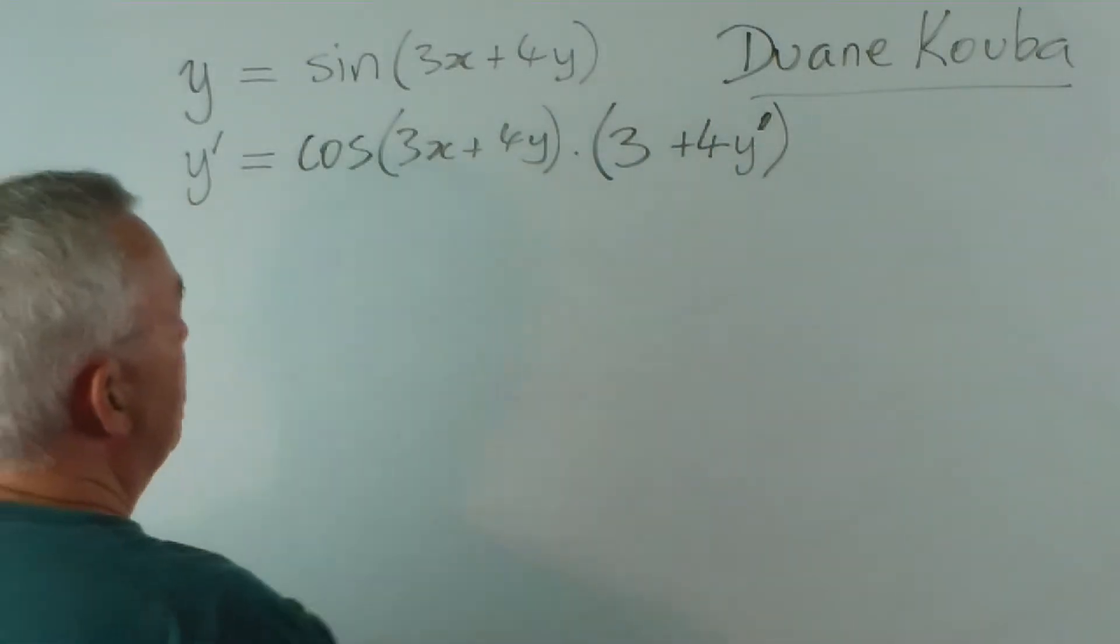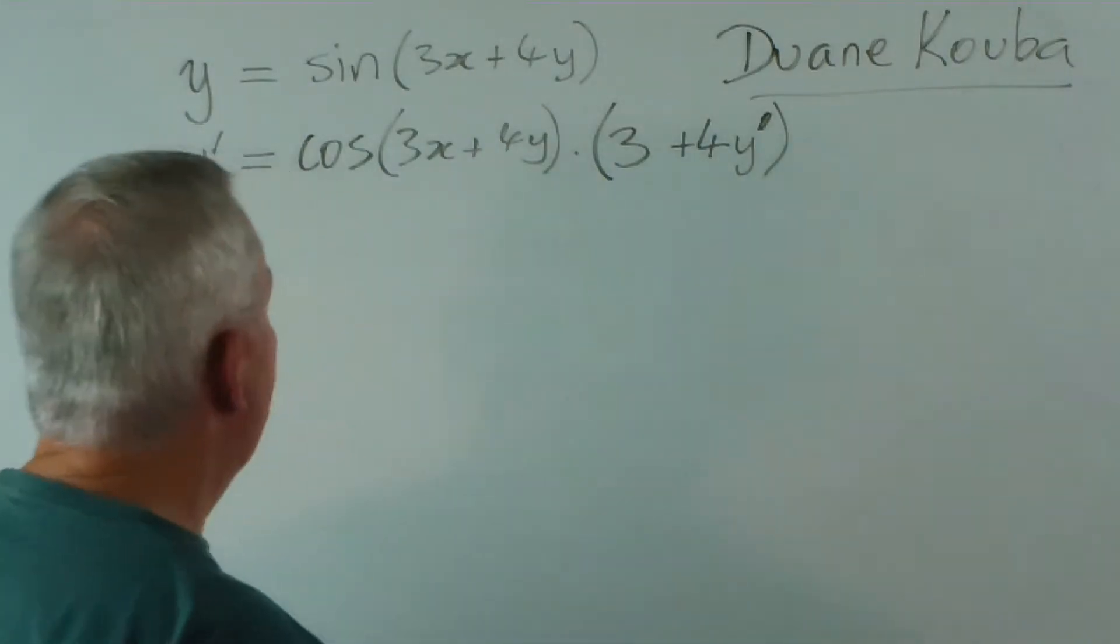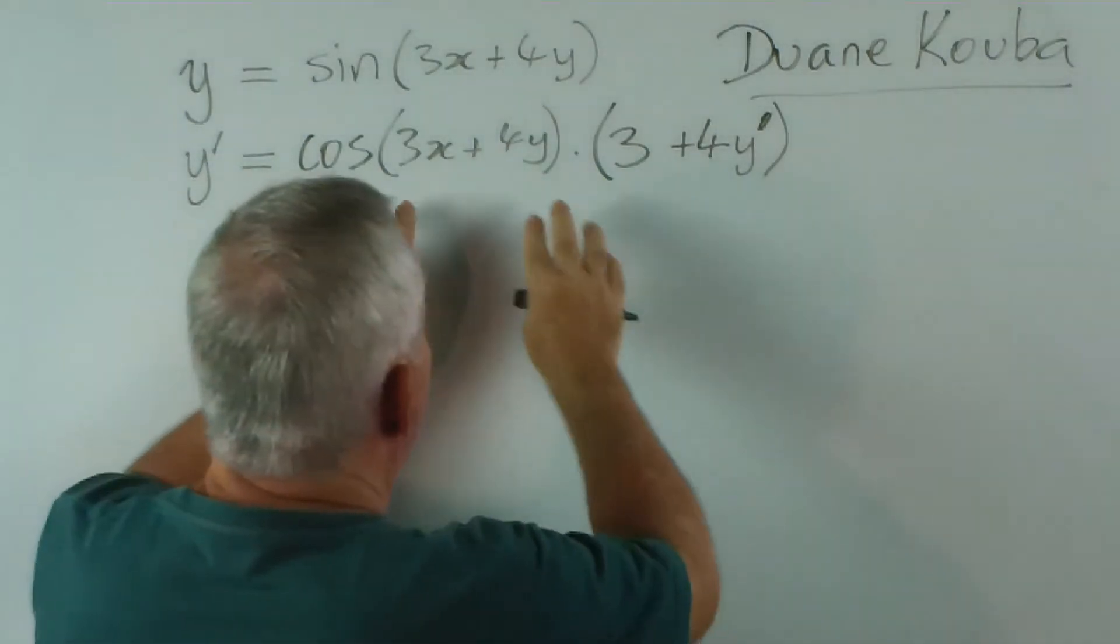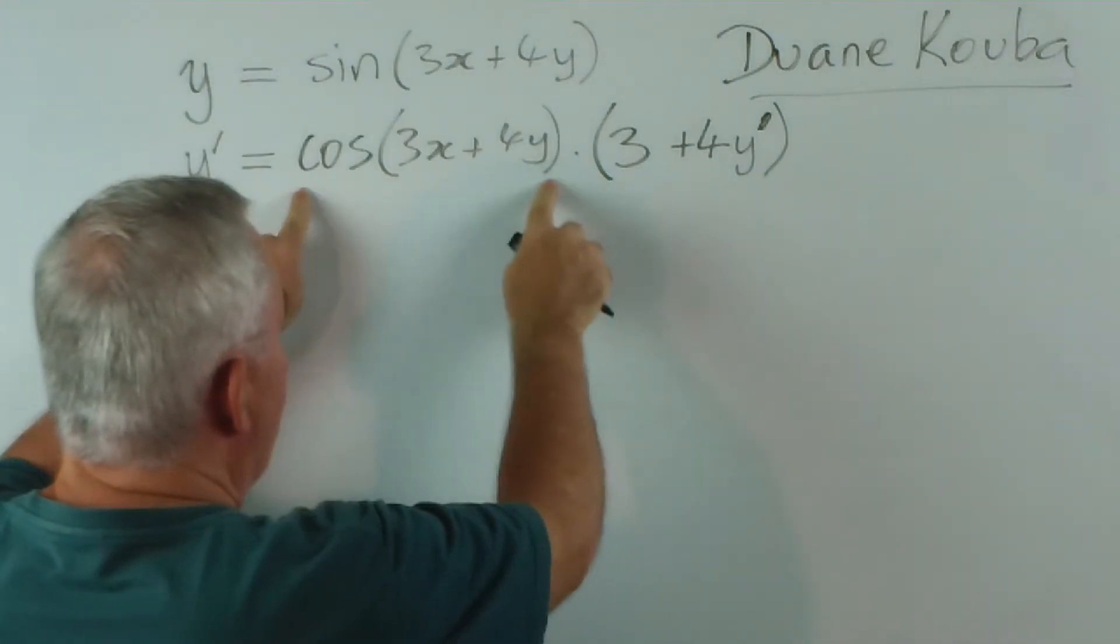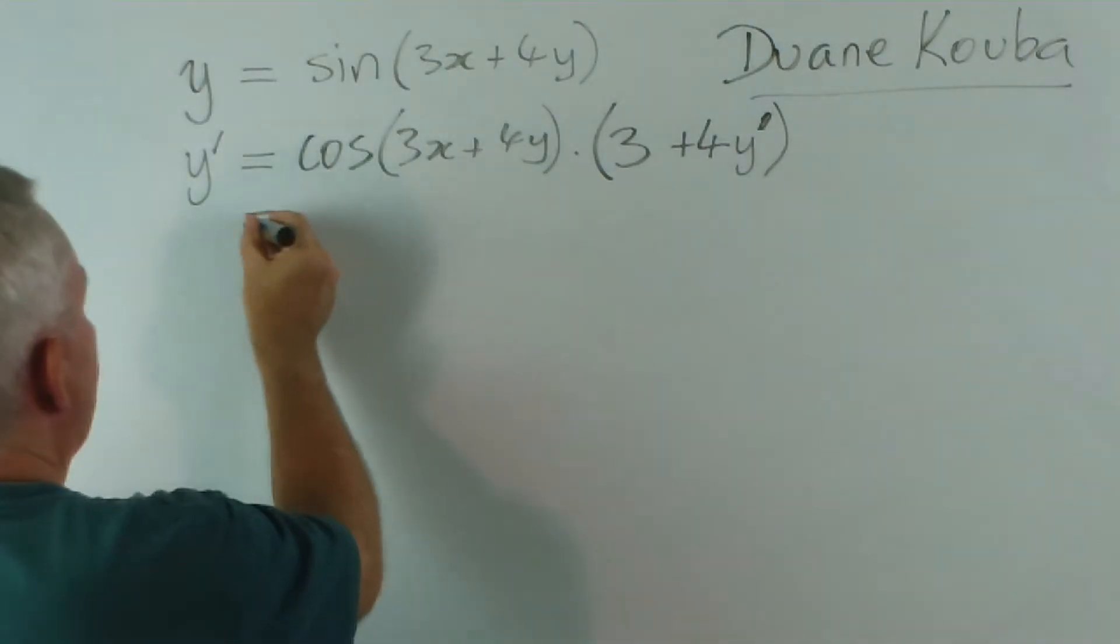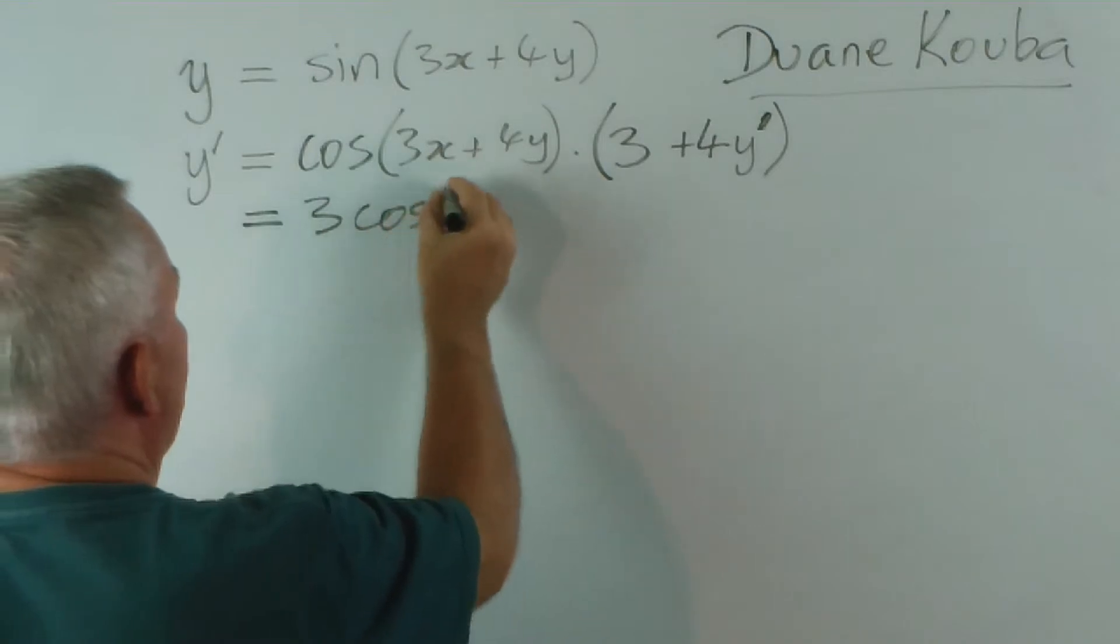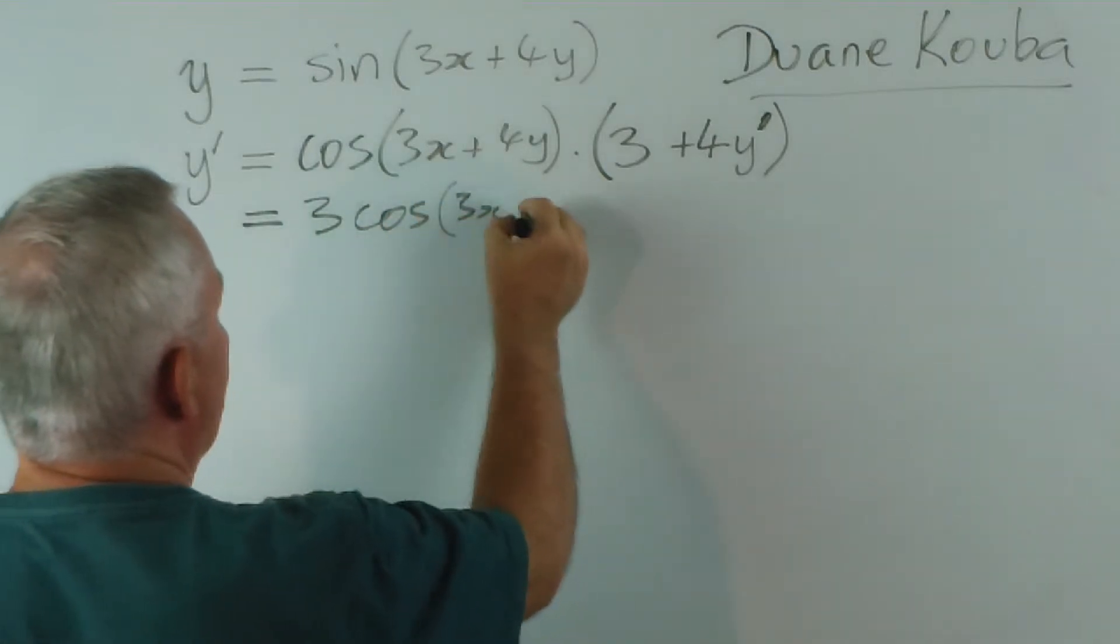We have a y dash here, we have a y dash here, and we can collect like terms. First of all, this expression here is multiplied by both of these. I'm going to separate them, so let's multiply this out. 3 times this, I'll write as 3 cos 3x plus 4y.